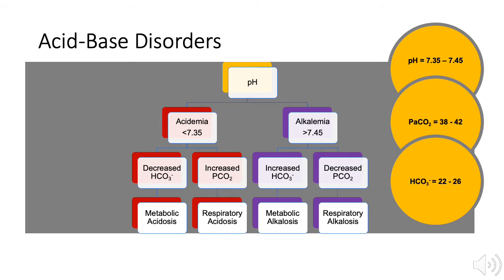Acidemia occurs when the pH is less than 7.35. This results from too little bicarbonate or too much carbon dioxide. Alkalemia occurs when the pH is greater than 7.45 and results from too little carbon dioxide or too much bicarbonate.